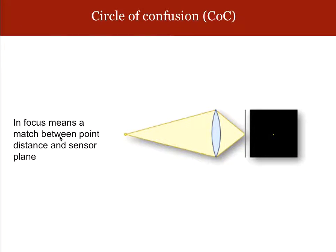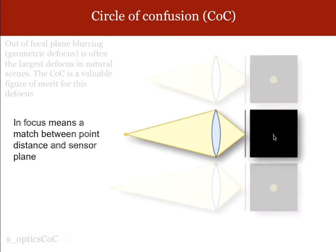In focus means that there's a good match between the distance that the point is from the optics and the position of the sensor plane, and that's what's shown here. This is a point that's in good focus, and the smallest this dot can get is determined by the diffraction limit of an ideal lens.